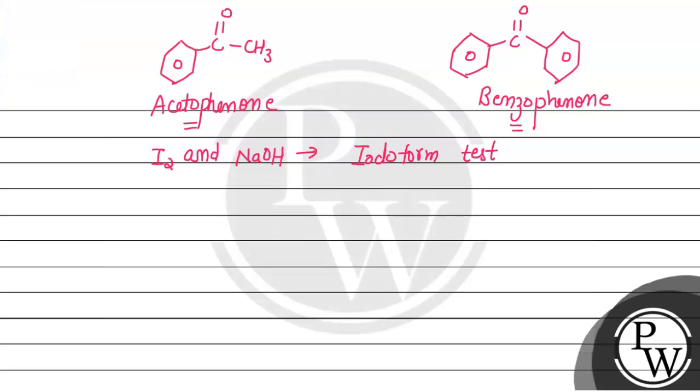Basically, the iodine and sodium hydroxide test is used to produce yellow precipitates which we call iodoform. So our compound which should be present has C double bond O and CH3 group for the iodoform test.